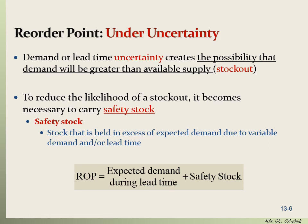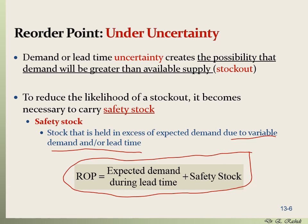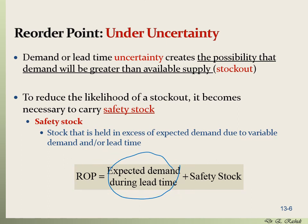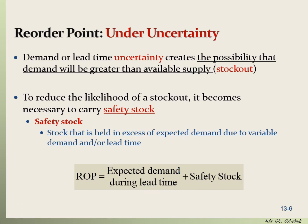Safety stock is the stock held in excess of expected demand due to variability in demand and/or lead time. The formula for the reorder point under uncertainty is: ROP = expected demand during lead time + safety stock. Whatever you compute based on your forecast and certainty assumptions, you add the safety stock for assurance. Safety stock immunizes us against uncertainty in the usage rate and in the lead time.